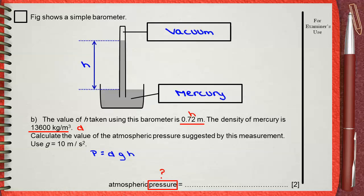D is the density, G is the acceleration due to gravity, and H is the height. Density of mercury is 13,600 times G, which is 10, times H, which is 0.72 meters. This shows that the atmospheric pressure is 97,920 Pascals.